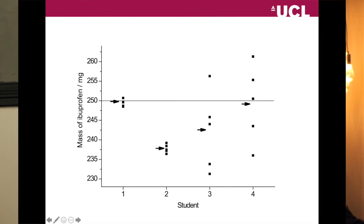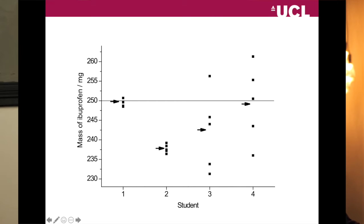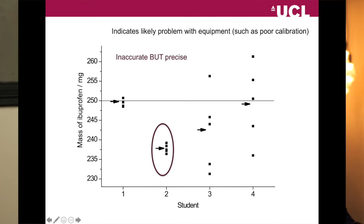What about student number two? Considering precision first — there is very little spread in their data, so the student is operating precisely. What about accuracy? The arrow is nowhere near the 250 line, so the answer is inaccurate. Student two is operating precisely but inaccurately.